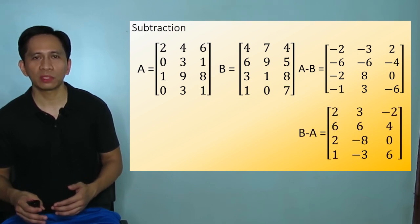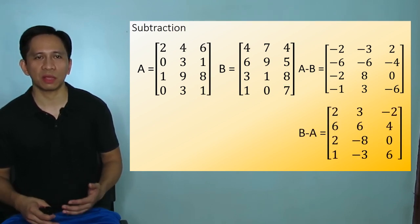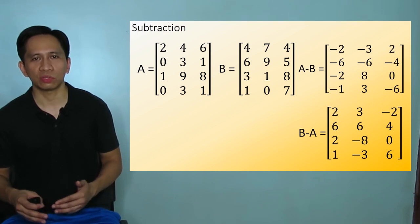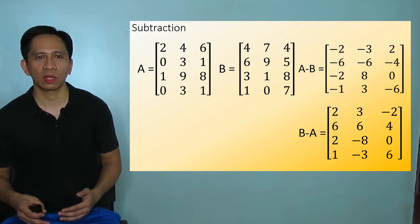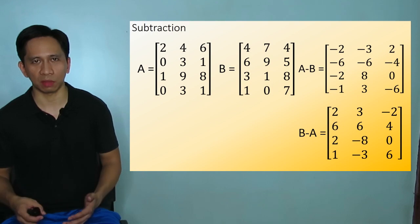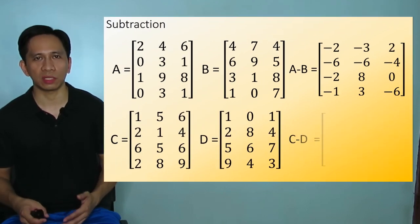And if you do B minus A, although the answer is not exactly the same as A minus B, you'll notice that you just need to reverse the sign but the magnitude is still the same. Now, try to solve C minus D.